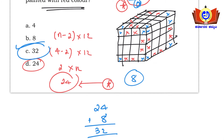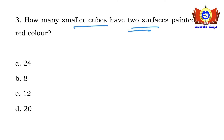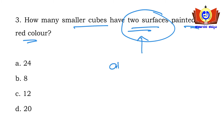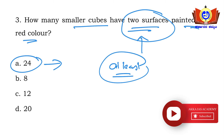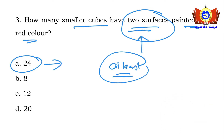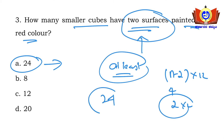Next question: how many smaller cubes have exactly two surfaces painted with red color? Notice the difference from the previous question — this says 'two surfaces only,' not 'at least.' So the answer is simply (n−2)×12 = (4−2)×12 = 24.